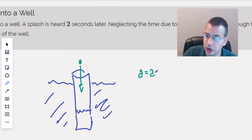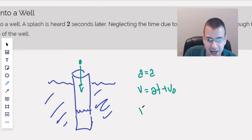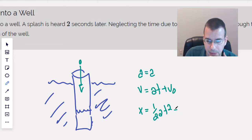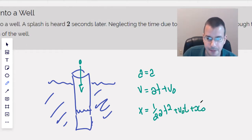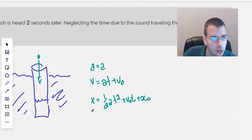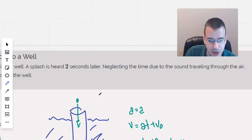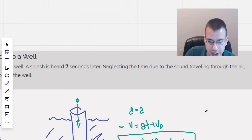Kinematic equations — draw a picture, determine that it's going to be a kinematic equation problem. v equals at plus v-naught, and x equals one-half a·t² plus v-naught·t plus x-naught. We're not given anything about velocity, so we're probably not going to use the first one. We're going to go with this second equation.